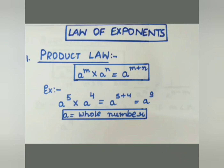First, the Product Law. When numbers are in exponent form with the same base, to get their product — that is, multiplication — we will be adding the powers while keeping the base the same. When they have the same base and the operation is multiplication, we add the powers. This is what the Product Law states.